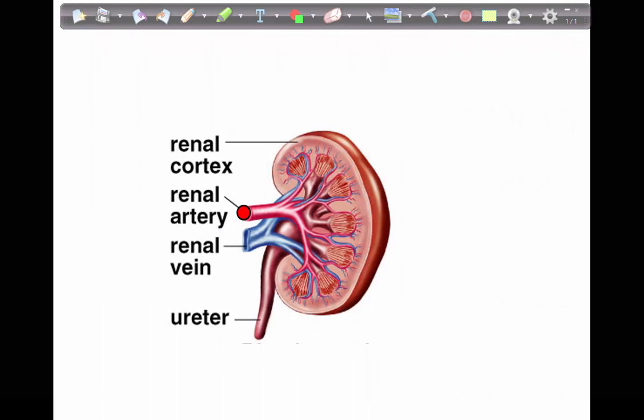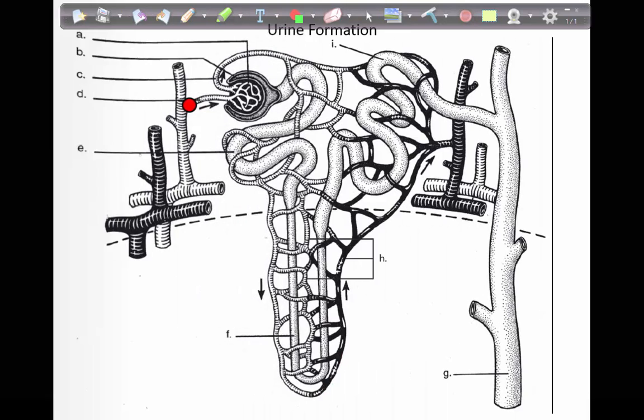It then travels into the afferent arteriole, into the glomerulus, that first knot of capillaries, then the efferent arteriole, and then into the peritubular capillary network.